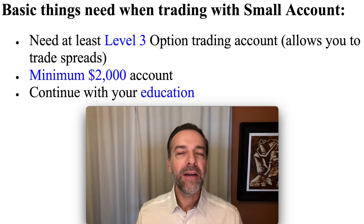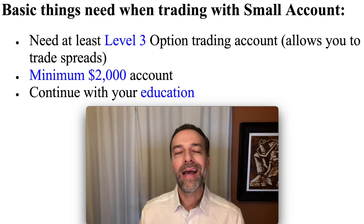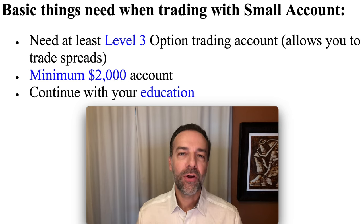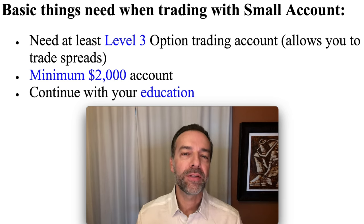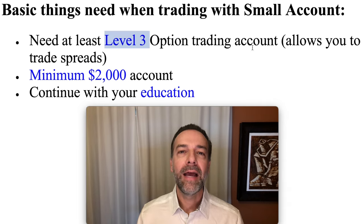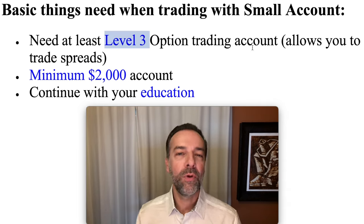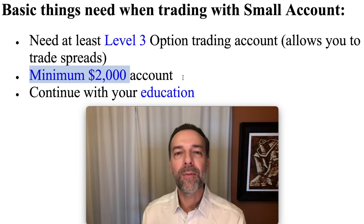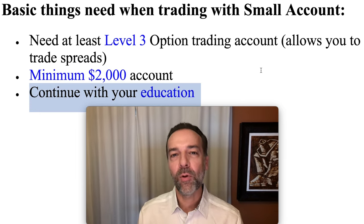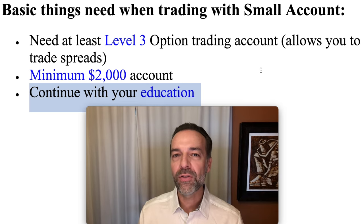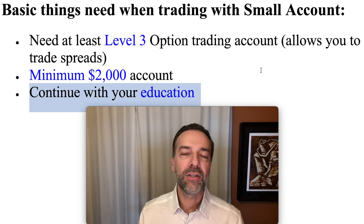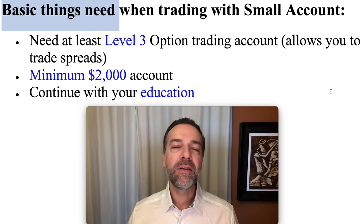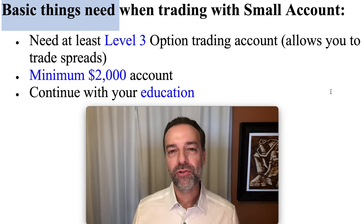Let's first lay the foundation of this video. What exactly do you need to have to start the minimal or smallest option trading account possible? Here you see three things. First, you need to have at least a level three options approval with your broker. You need to have at least a minimum $2,000 set aside for this option trading account. After this video is over, you want to continue your education. So these are the basic things you need when you're starting out with a small option trading account.